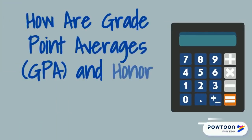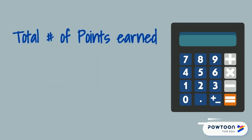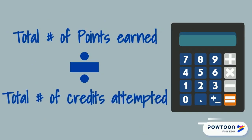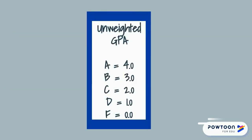Now let's look at your GPA in more detail. GPA is calculated by converting each of your semester and final grades to points, then we determine the average by dividing the total number of grade points earned by the total number of credits attempted. You can see the scales used to award points listed here.